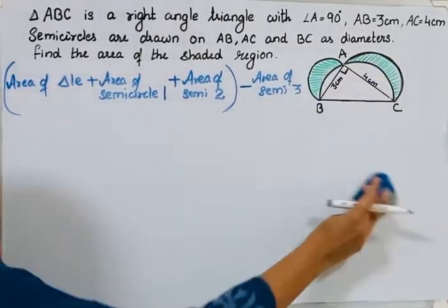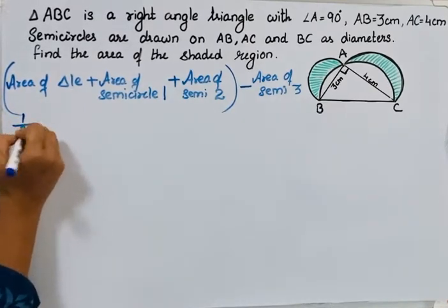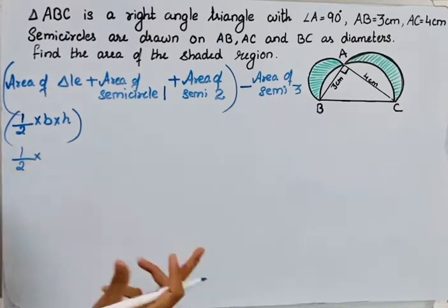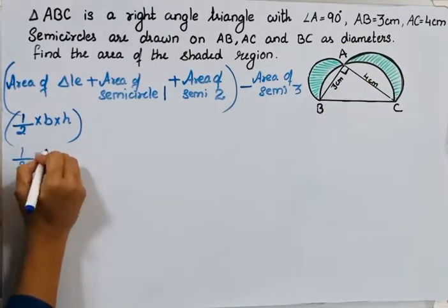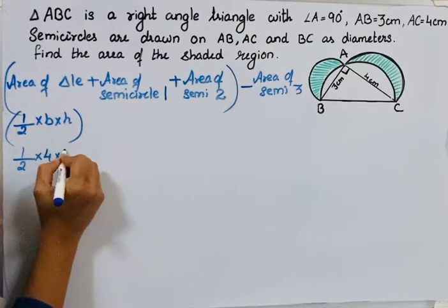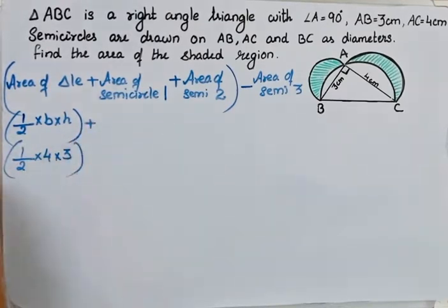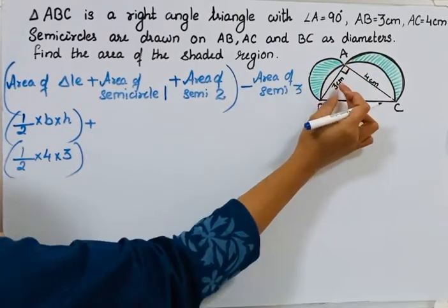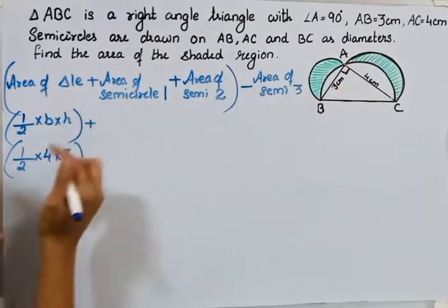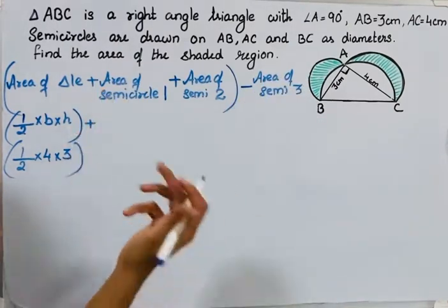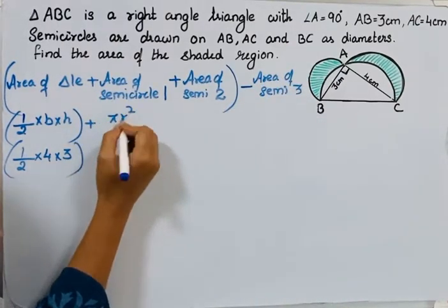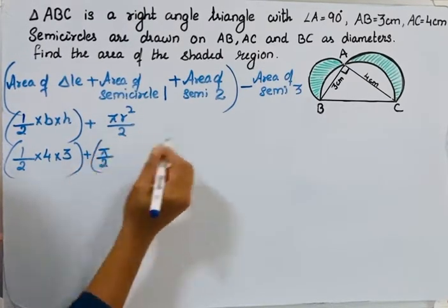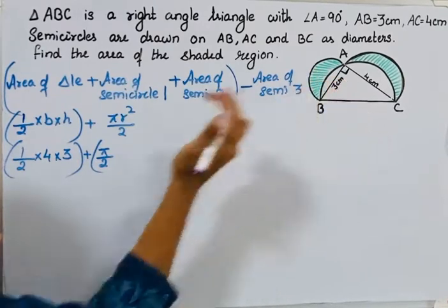Let's start now. The area of a triangle formula is half of base into height. Here, the base of the triangle is 4 and the height is 3. Next, semicircle 1, which has AB as diameter — so the diameter is 3, and the radius will be 3/2. The area of a semicircle formula is π r² / 2, so the radius of this semicircle is 3/2.